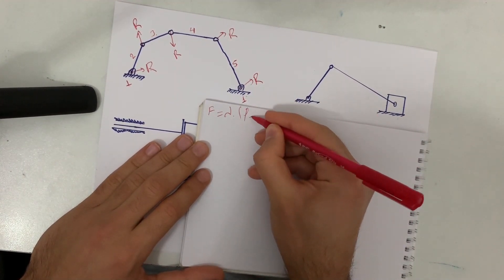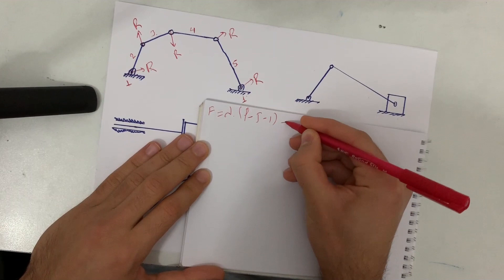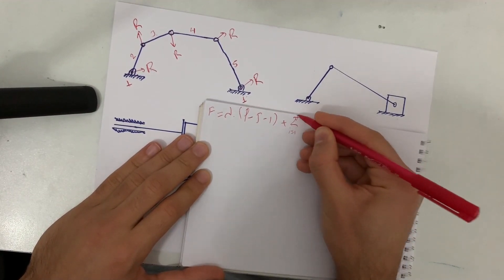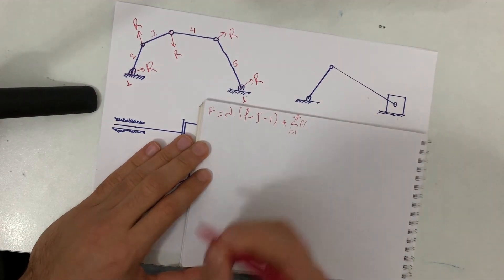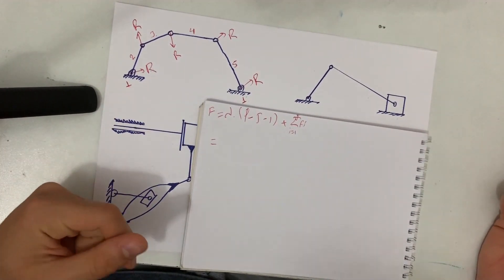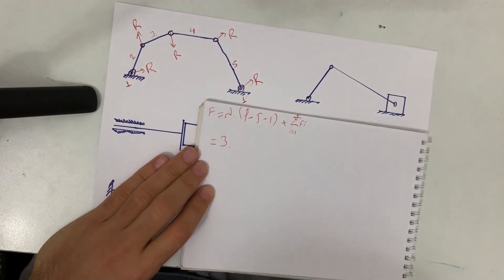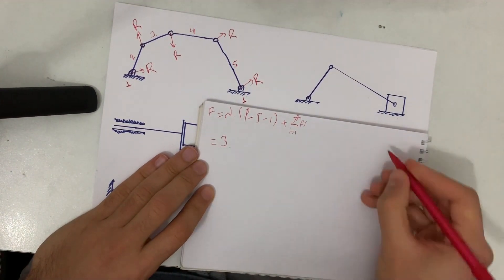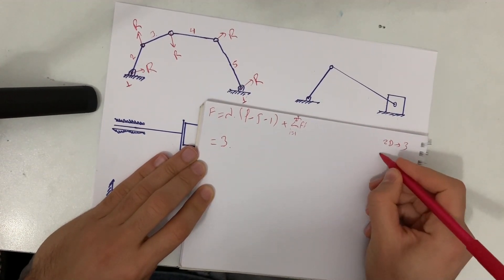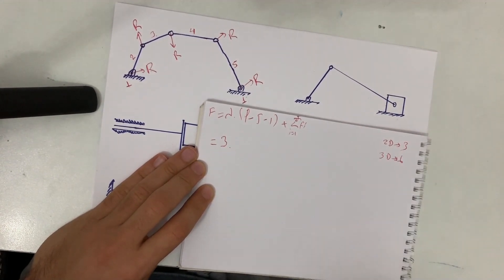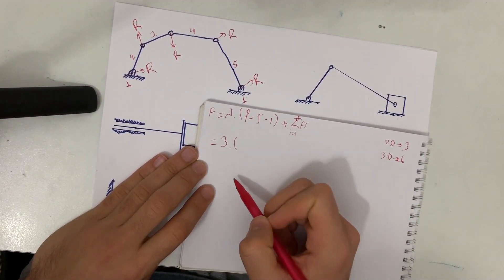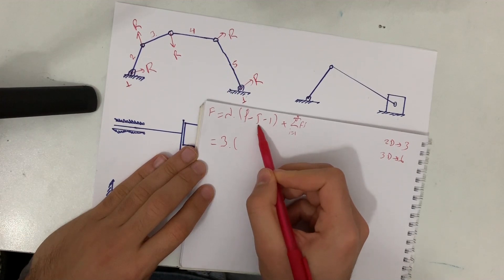The formula is: F = lambda × (L − J − 1) + summation of f_i. This is again a two-dimensional problem, so we write lambda = 3. For 3D problems, lambda = 6. Now let's find L (number of links) and J (number of joints).